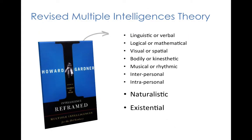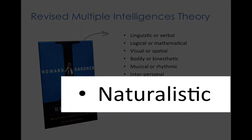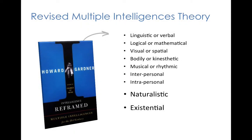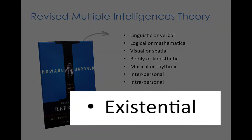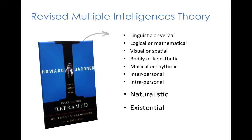In 1999, in his second book titled Intelligence Reframed: Multiple Intelligences for the 21st Century, Gardner added two additional intelligences to the seven he had proposed earlier: naturalistic intelligence, a deep understanding about ecological relationships, and existential intelligence, the capacity to dwell deeply into the meaning of life and death.